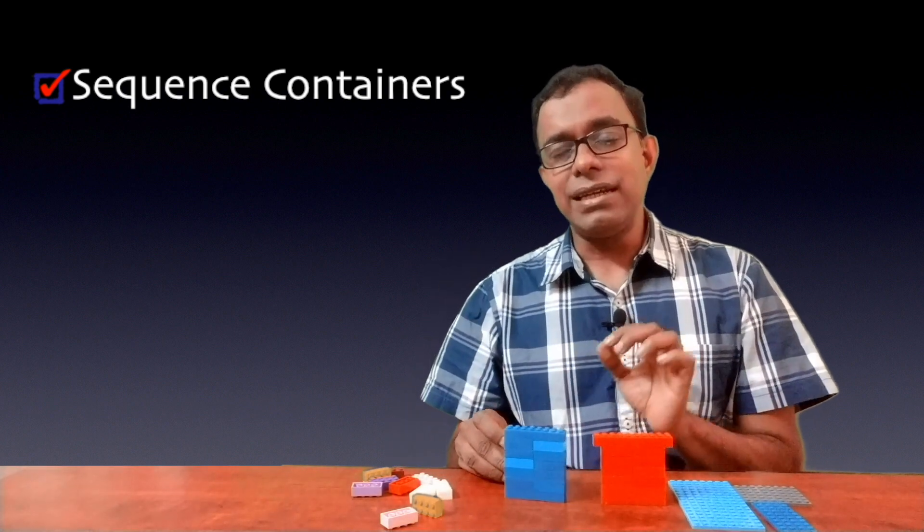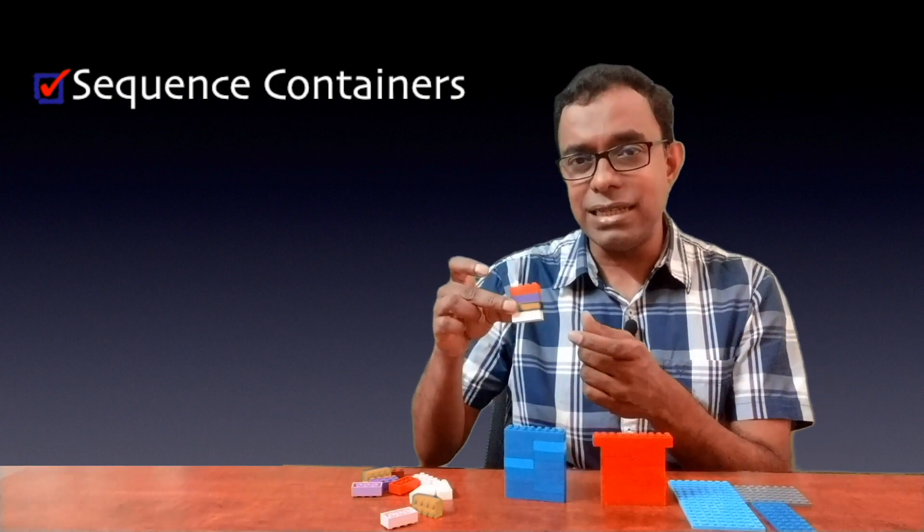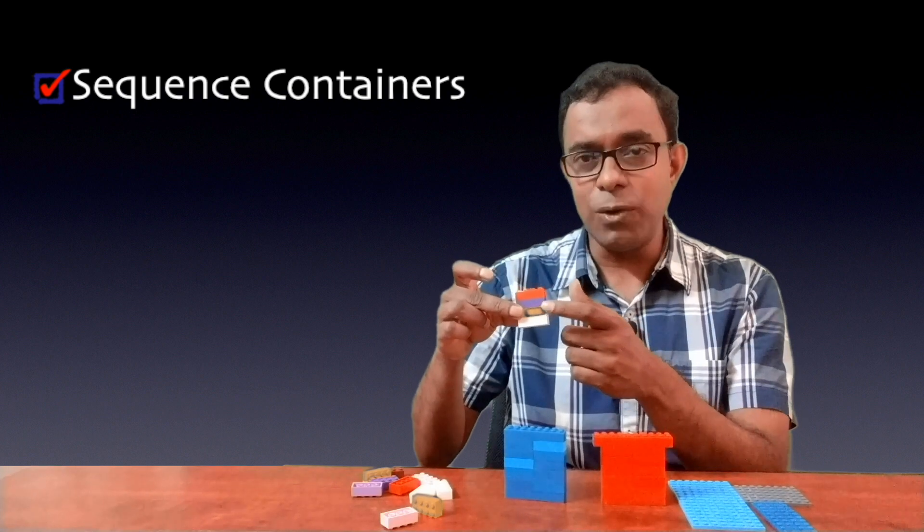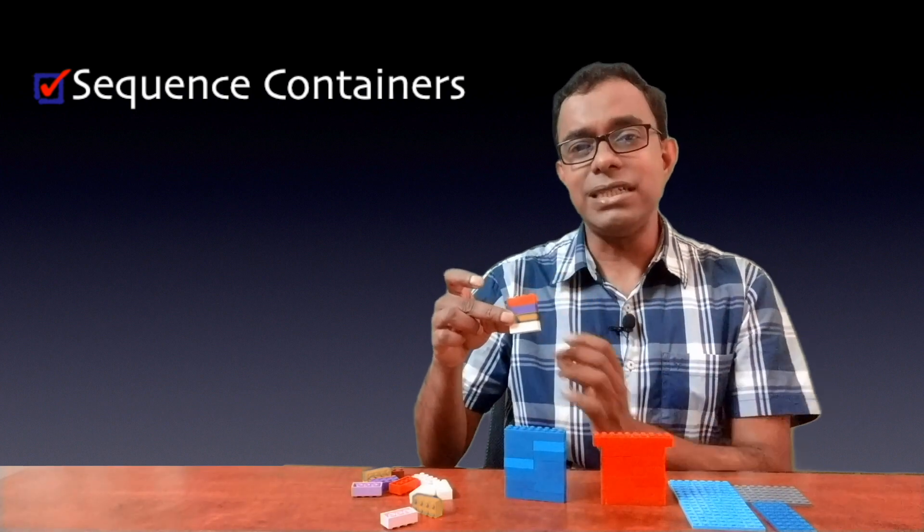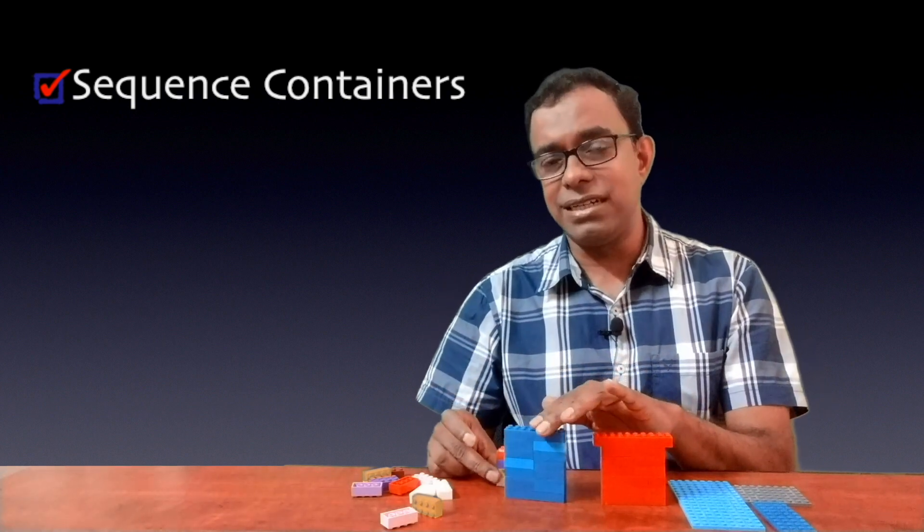What sequence container guarantees us is that the data will be stored in the same order as it was inserted: white, yellow, purple, red. It will not change the insertion sequence of the data. That's why it is called a sequence container.